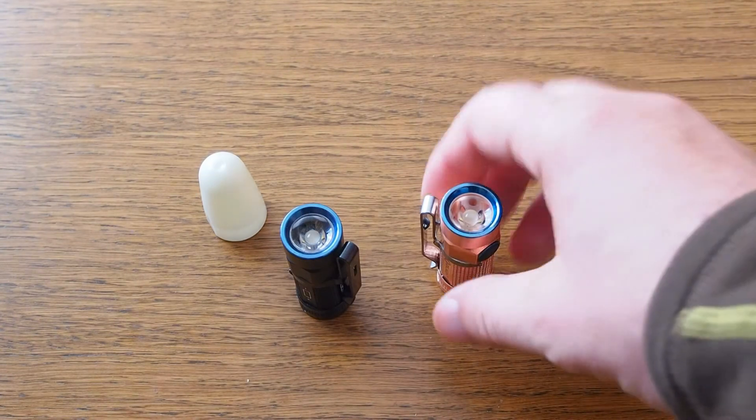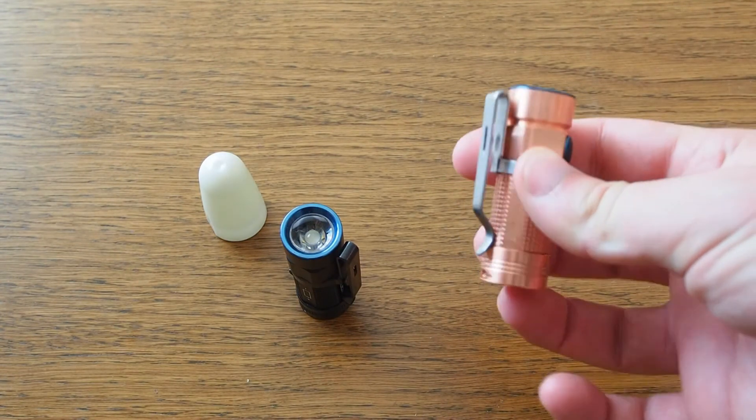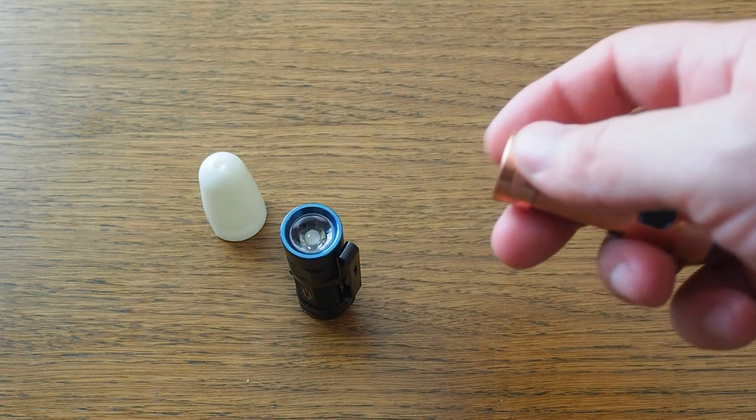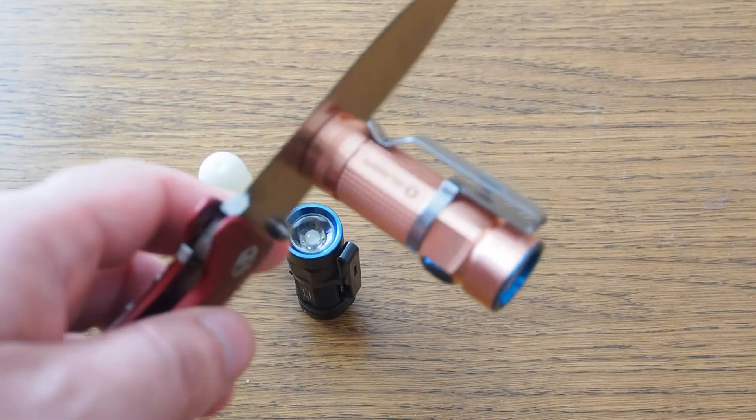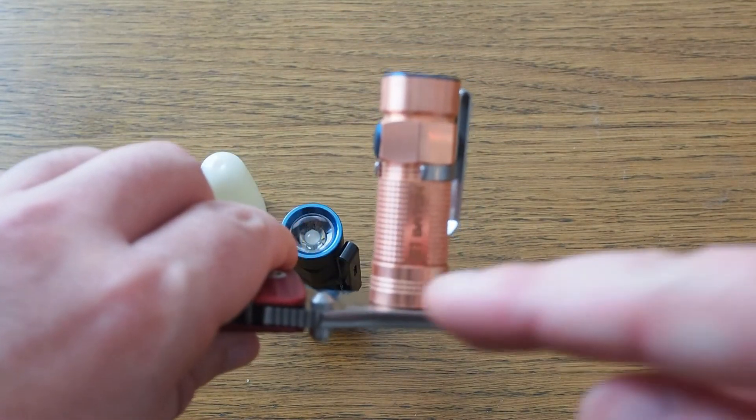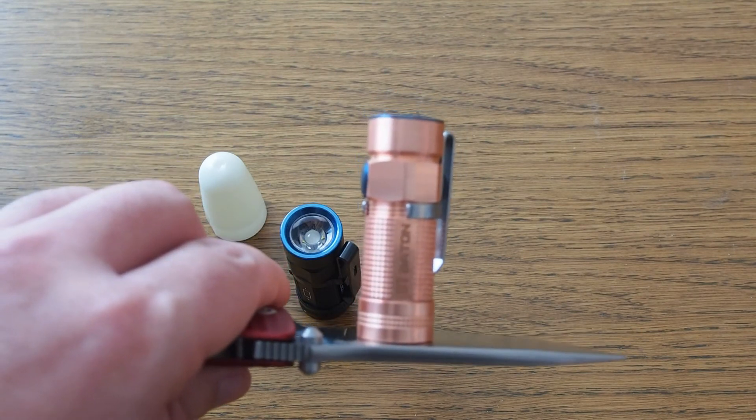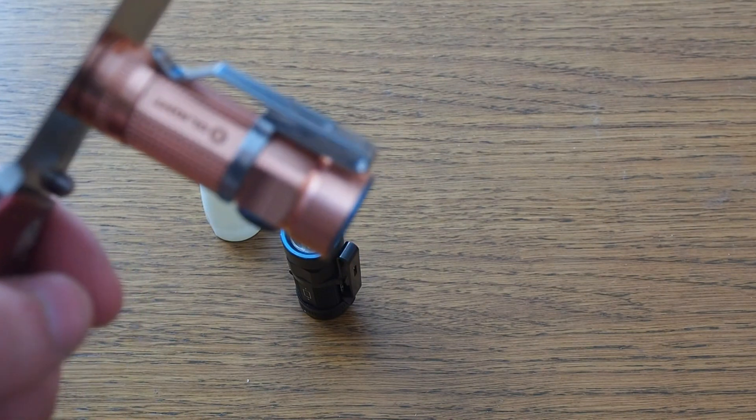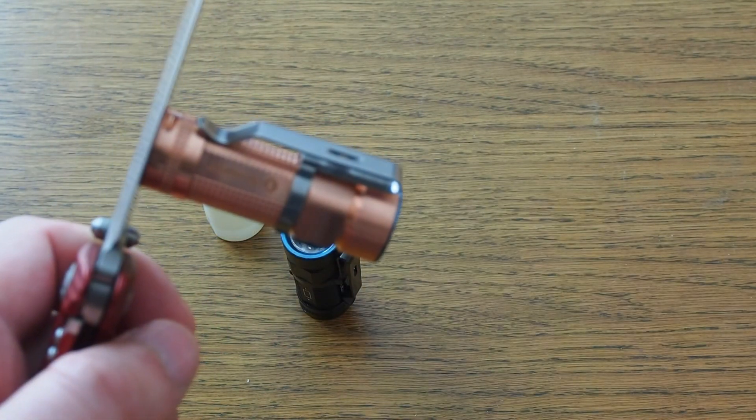One more thing. Both of these lights have magnets in the tails, which is really practical, I think. But if you really want to, you can take off the magnet if it annoys you or if you carry it along with some electronic devices. But it often comes in handy when you can attach it to a metal surface and have your hands free.